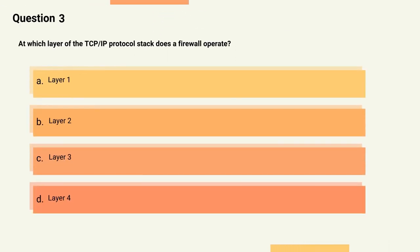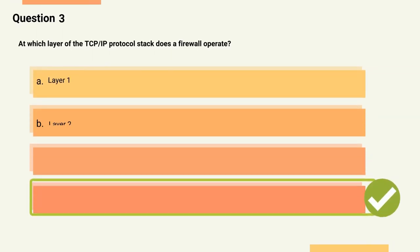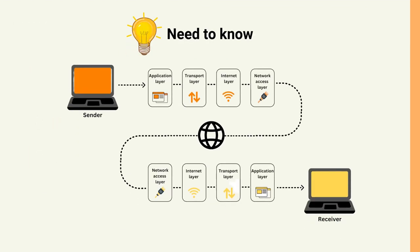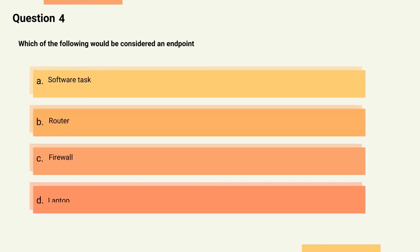Question 3: At which layer of the TCP/IP protocol stack does a firewall operate? Options: A) Layer 1, B) Layer 2, C) Layer 3, D) Layer 4. The correct answer is Option D, Layer 4. Explanation: Firewalls operate at the transport layer, Layer 4, of the TCP/IP protocol stack, which is responsible for managing communication between applications running on different hosts.